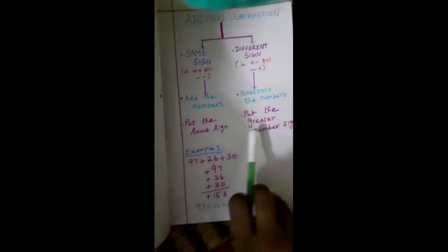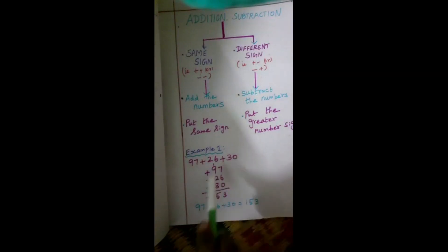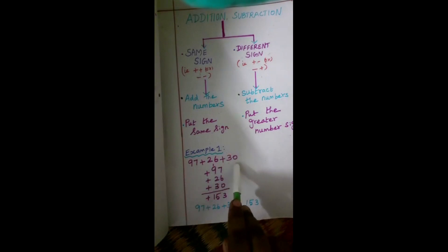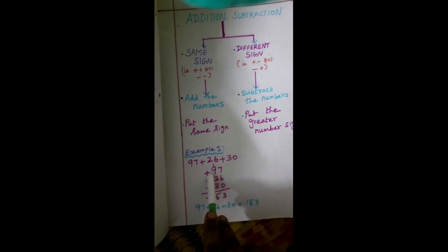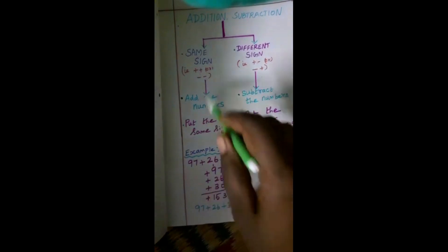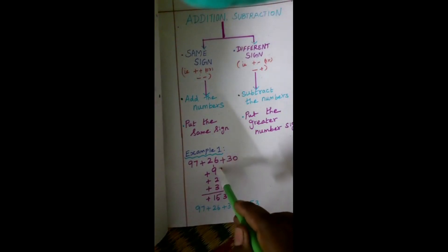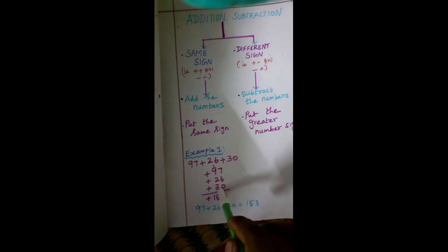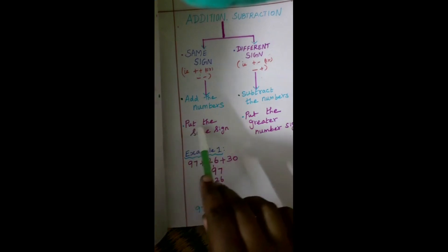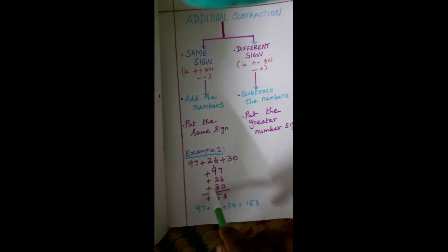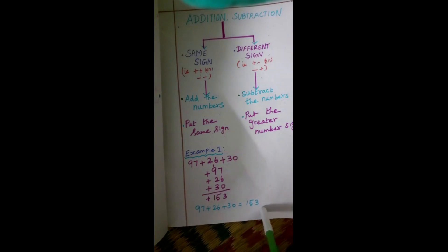Let's see Example 1: 97 plus 26 plus 30. These 3 numbers contain the same sign, which is plus. That means addition. When the sum contains the same sign, first you add the numbers: 7 plus 6 is 13, carry 1; 9 plus 1 is 10, plus 2 is 12, plus 3 is 15. The second step is to put the same sign, which is plus. Therefore, the answer is plus 153.